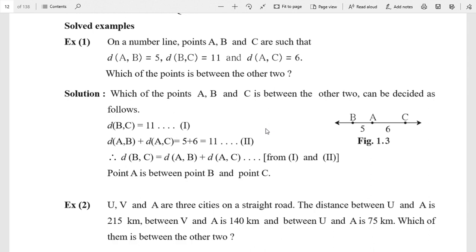The first example is: On a number line, points A, B, and C are such that d(A,B) = 5, d(B,C) = 11, and d(A,C) = 6. Which of the points is between the other two?